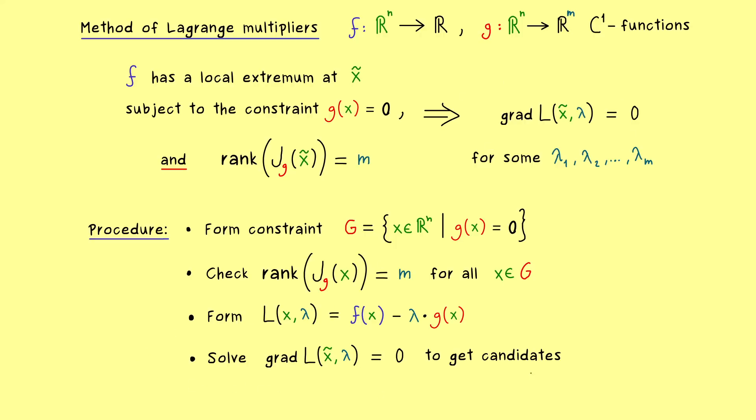And then, in the best case, we get a finite number of candidates x tilde in Rn. So only at these points, we can have a local extrema of f subject to the constraint G is equal to zero.